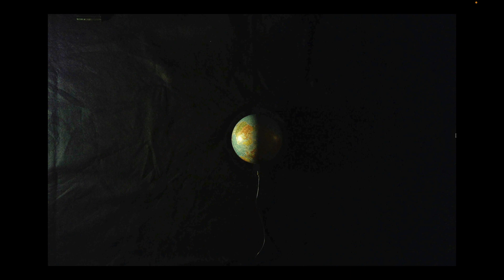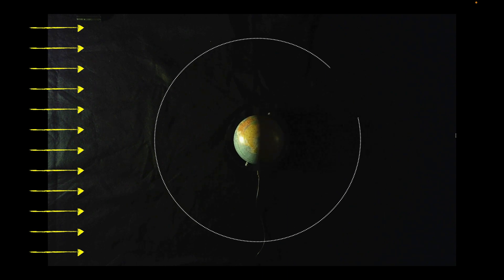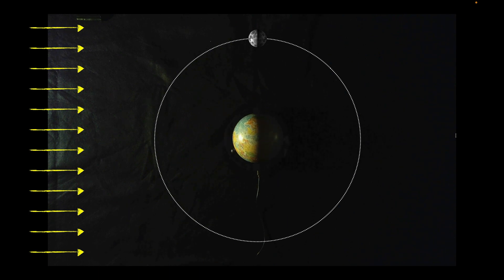We're going to bring in some sunlight here so that we see that the left side of the Earth is in daytime and the right side is in nighttime. Now we'll draw an orbit for the Moon and drop the Moon in. Just like the Earth, the left side of the Moon is illuminated by the Sun and the right side is in darkness — there's the daytime side and the nighttime side of the Moon.